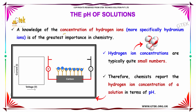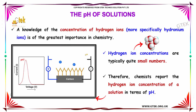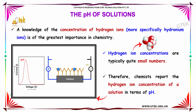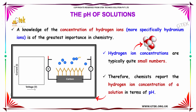A knowledge of the concentration of hydrogen ions is of the greatest importance in chemistry. Hydrogen ion concentrations are typically quite small numbers. Therefore, chemists report the hydrogen ion concentration of a solution in terms of pH.